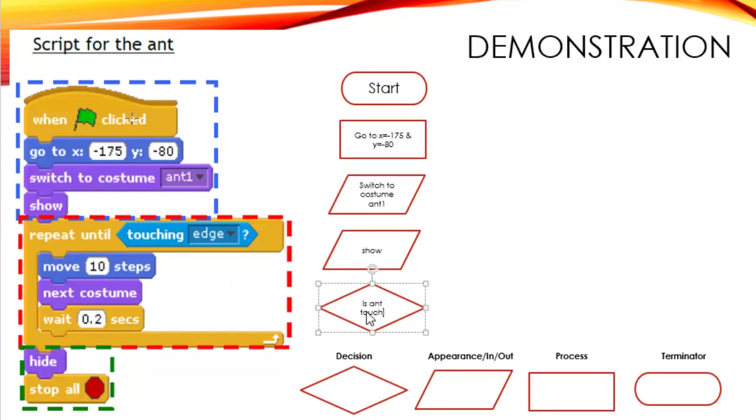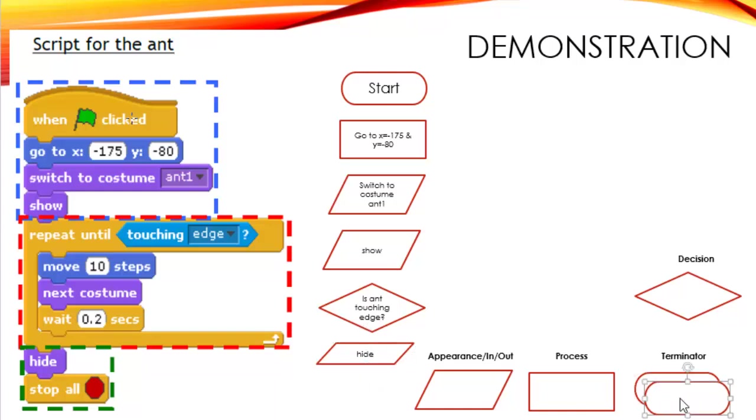Is ant touching edge? If the answer is yes, I have to move to the bottom. So I am going to move this to the right side in order to make space. If it is touching edge, then the answer is yes. And I will come from this loop to go to hide and stop all. And hide is appearance. So I am going to make it smaller here. And stop all is the terminator. And it is represented by end.